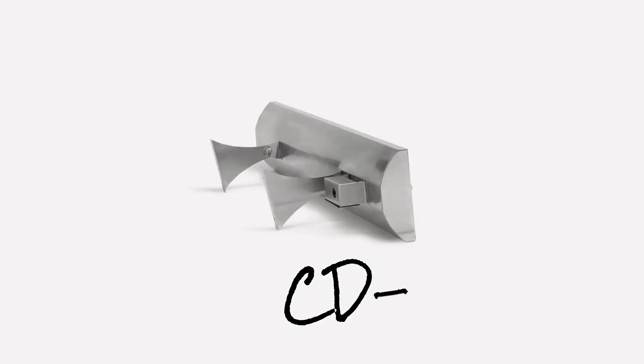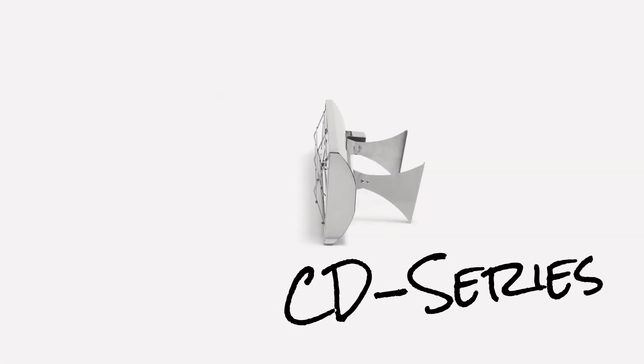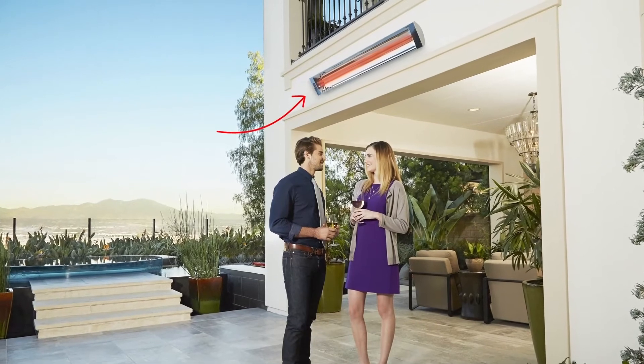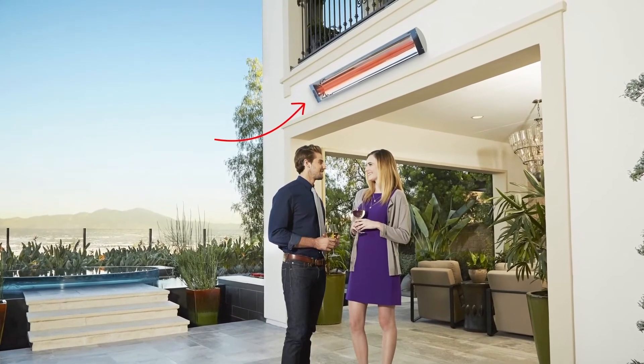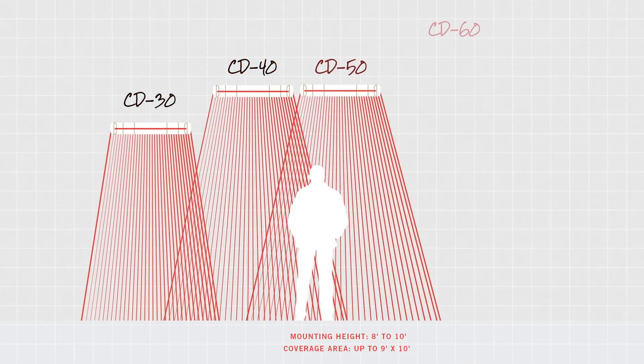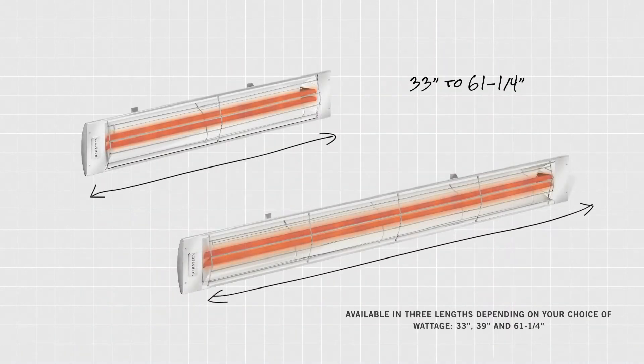Infratech's powerful contemporary series dual element heaters feature the same design advantages as the single element C series but provide more concentrated heat for larger scale applications where a minimal design aesthetic is desired. CD series dual element heaters are available in a variety of wattages and can be mounted at heights ranging from seven to twelve feet.